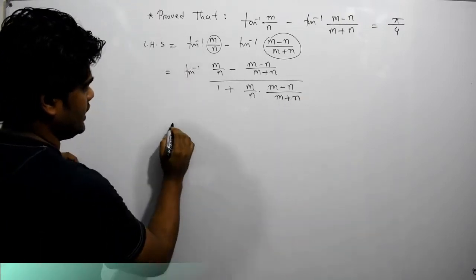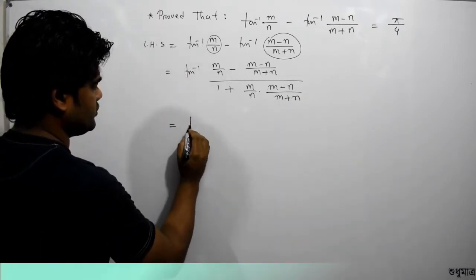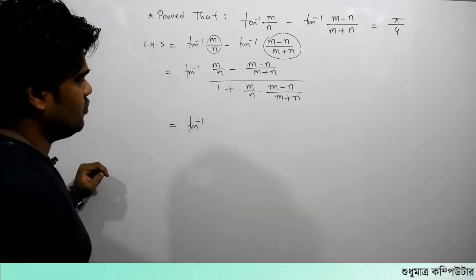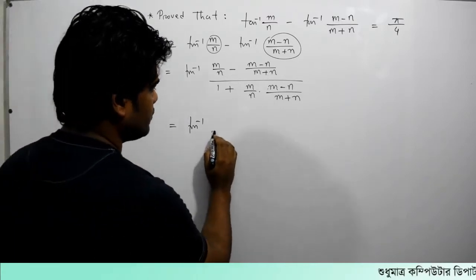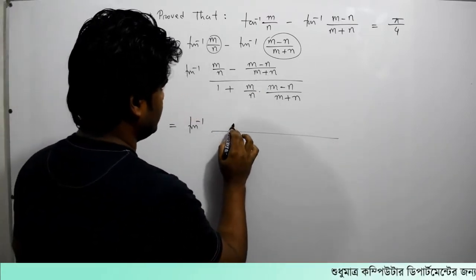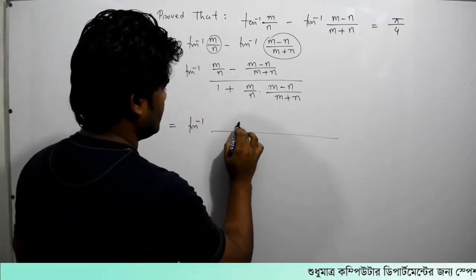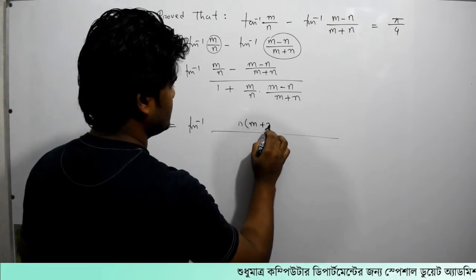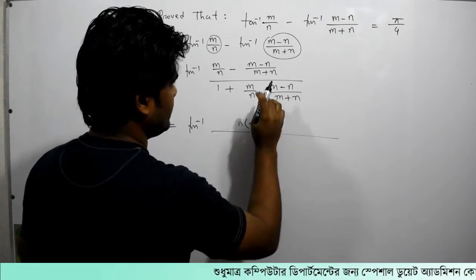Now we have to calculate the inverse. We have to calculate the inverse — what is the inverse? We have to calculate n into (m plus n).